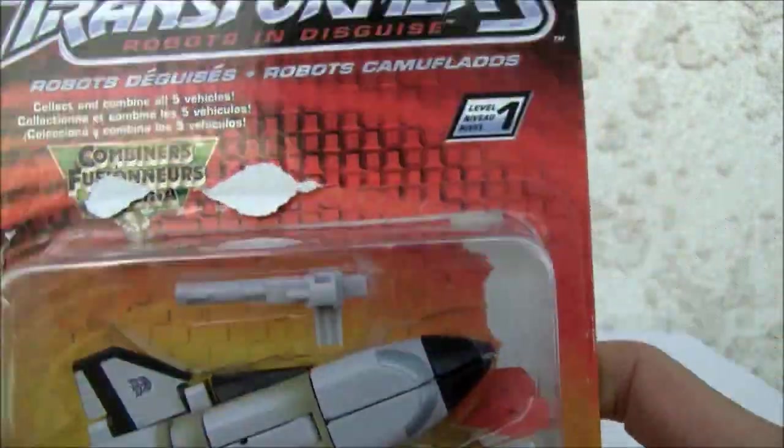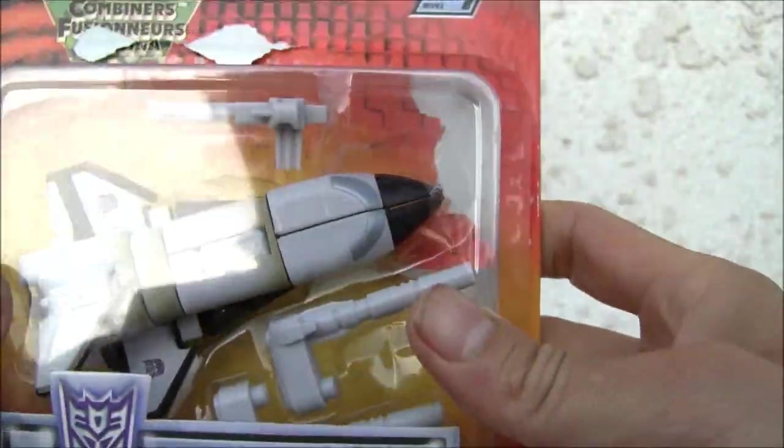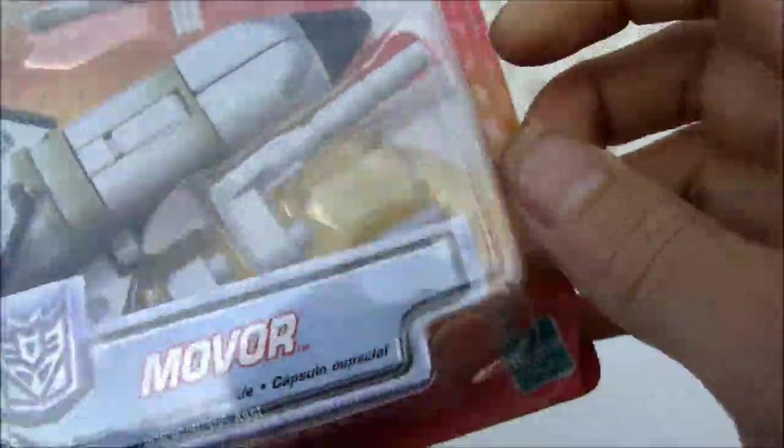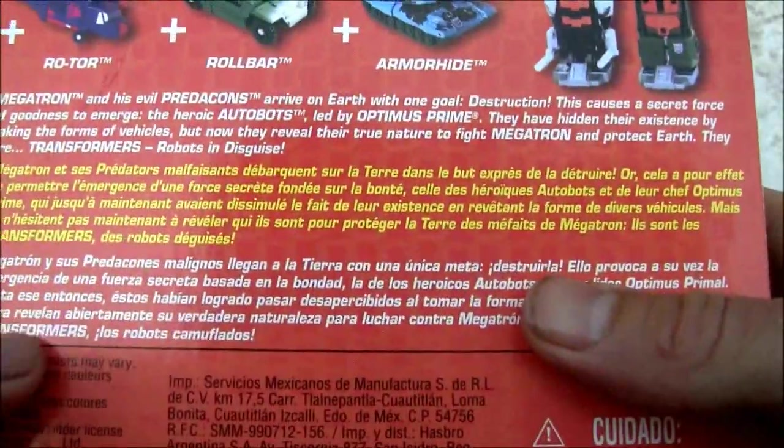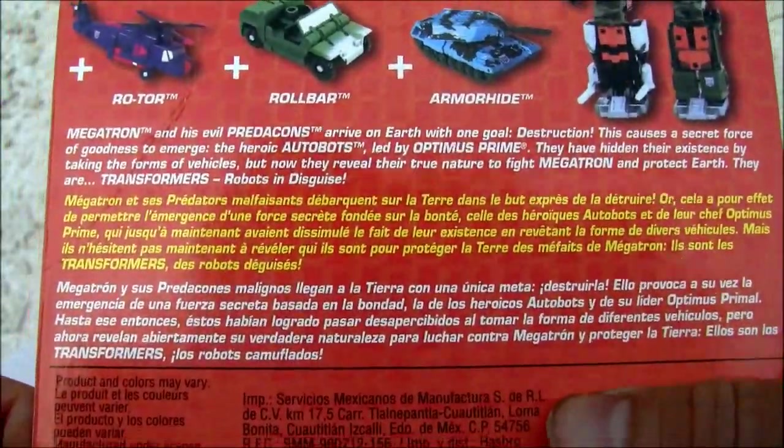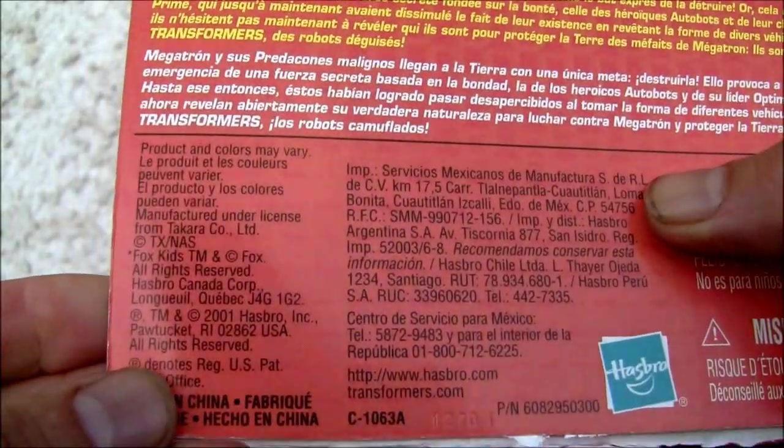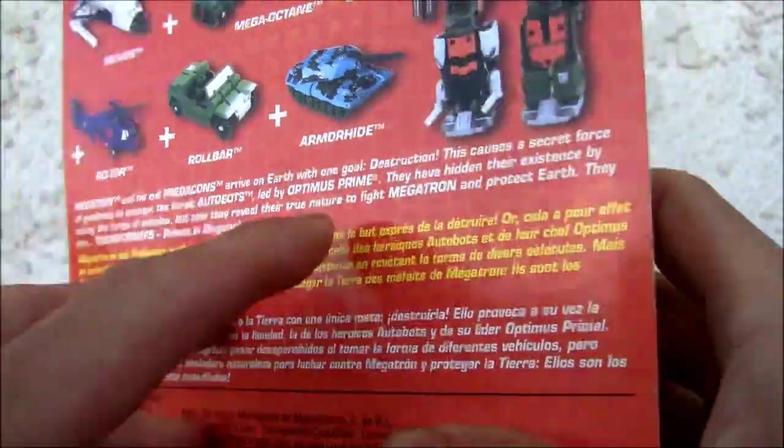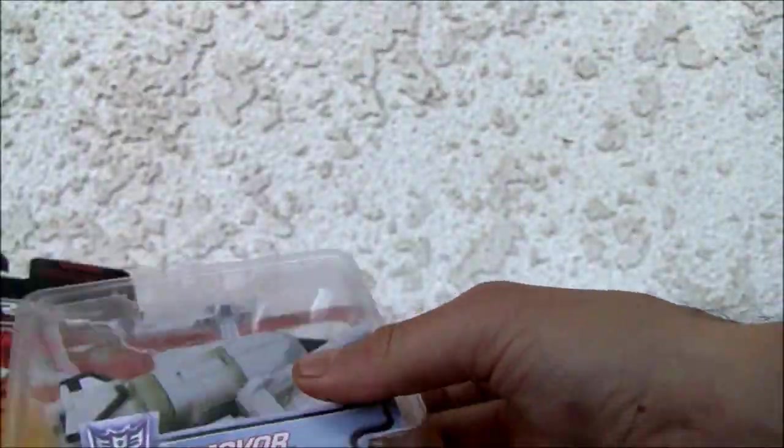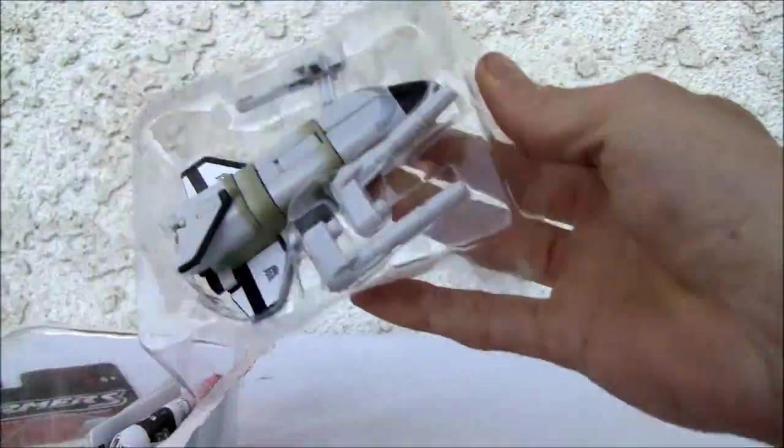So there you go, here's the package. Not bad looking. Of course it forms Ruination and of course there's a story if you really want to read about it. 2001 Megatron, Predacon, blah blah blah. So there you go, let's take them out of package.